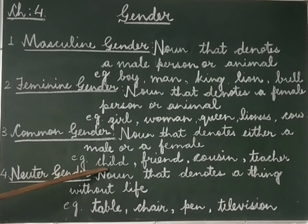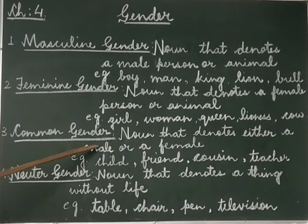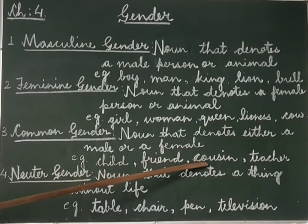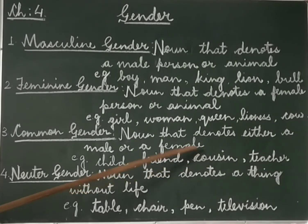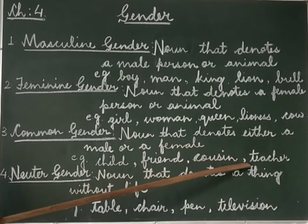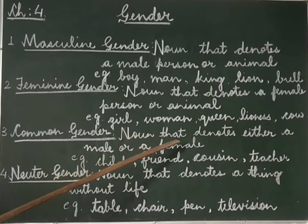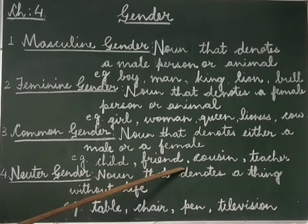For example, child — child can be a male or a female. In the same way, friend can be a male friend or a female friend. Cousin can be a female, and teacher can be a male or female. So they are common in both male and female, and are said to be common gender.